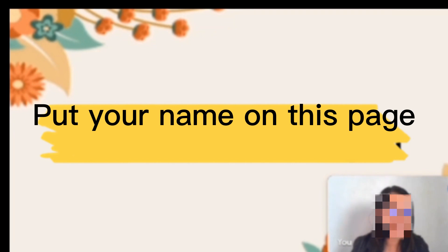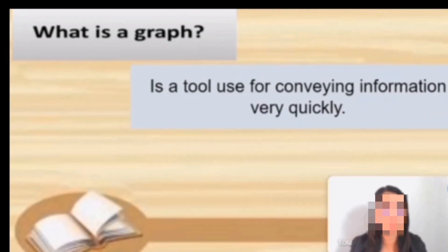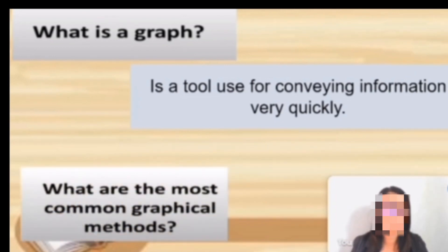We will have a quick review of our previous lesson. Yesterday we talked about graphical representation of measure of central tendency. My first question is, what is a graph? Very good, a graph is a tool used for conveying information very quickly. What are the most common graphical methods? Line graph, bar graph, pie graph.